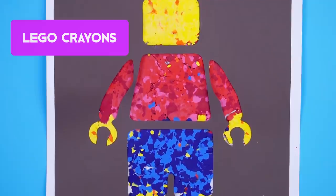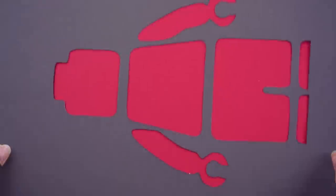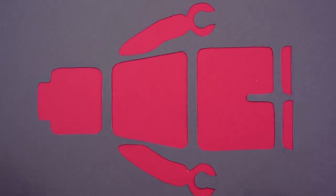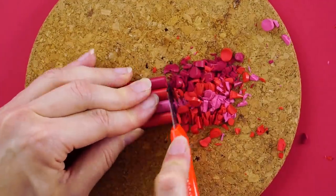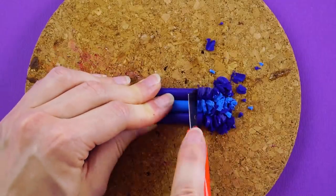Lego Crayons. If you love Legos as much as we do, you're going to love this! Cut out a Lego stencil with construction paper. Use a box cutter to cut your crayons into tiny pieces. You can use different colors for the shirt, the pants, and the head.